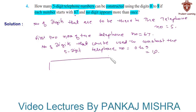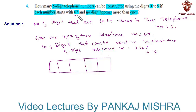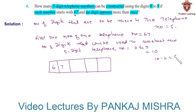Now let us draw 5 boxes representing the 5 digits of the telephone number. Since each number starts with 67, the first two digits have already been occupied by 6 and 7. As repetition of digits is not allowed, the number of digits that can be used to fill the next three places is 10 minus 2, that is 8.